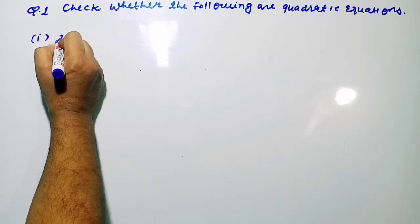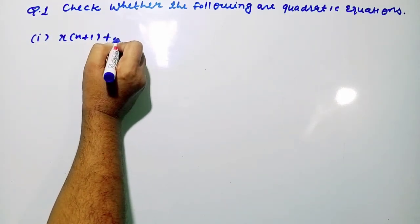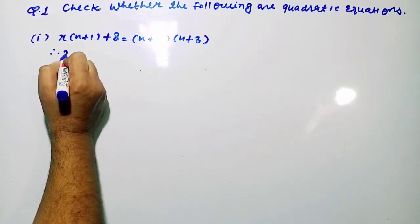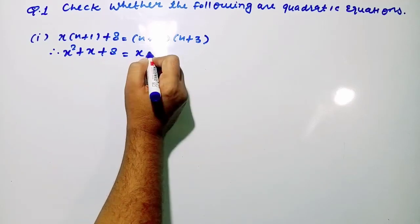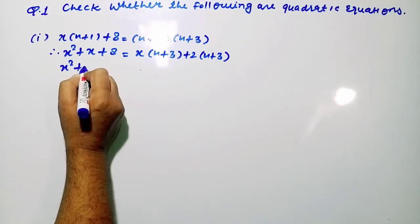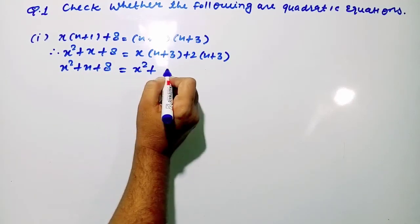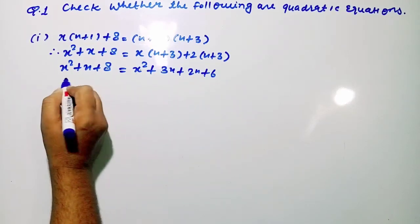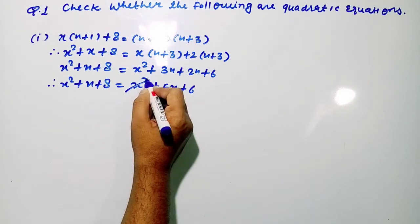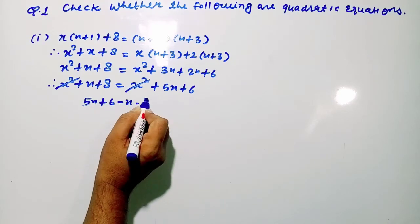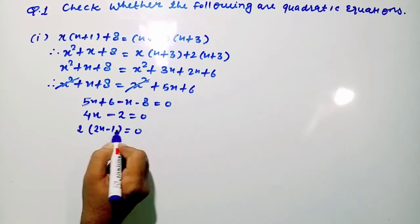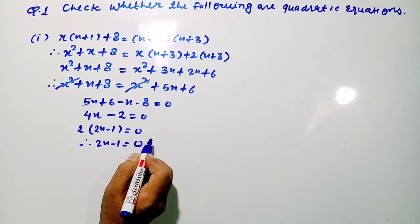Let us check whether the following are quadratic equations or not. The first question is x(x + 1) + 8 = (x + 3) × 2(x + 3). Multiplying out, we get x² + x + 8 = x² + 5x + 6. The x² terms cancel, giving 5x + 6 − x − 8 = 0, which simplifies to 4x − 2 = 0. The degree of this equation is not 2, so this is not a quadratic equation — it is a linear equation of degree 1.